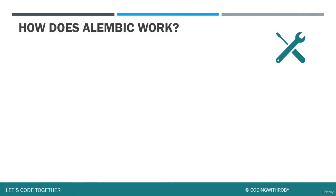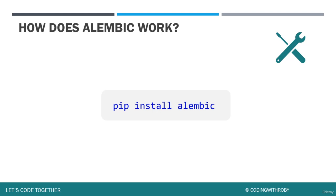To start, we need to install Alembic to our application. We go to our terminal and type 'pip install alembic'. This will install all the needed dependencies for our application to properly use Alembic.